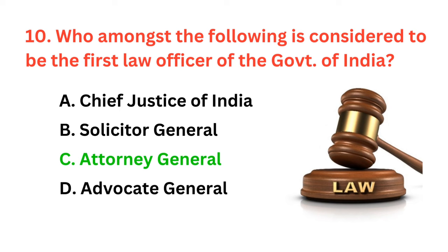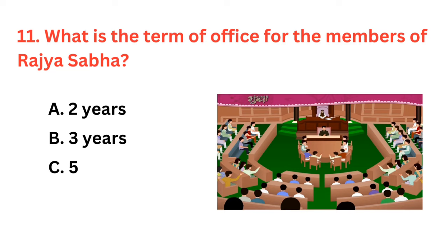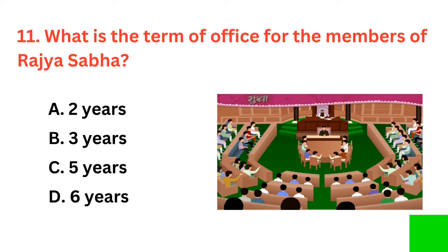What is the term of office for the members of Rajya Sabha? The correct answer is option D: six years.